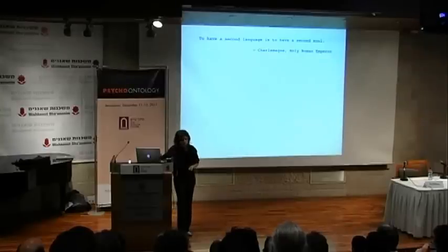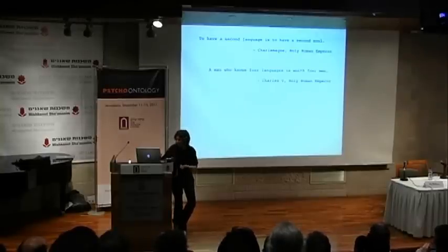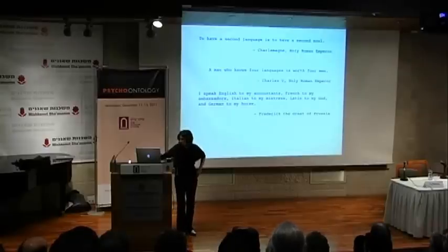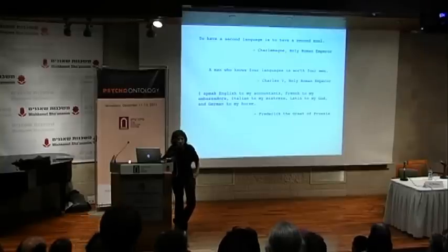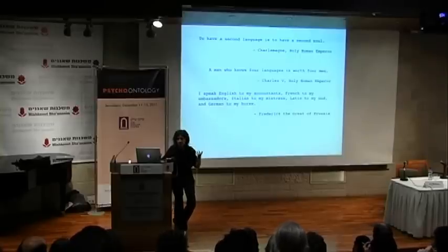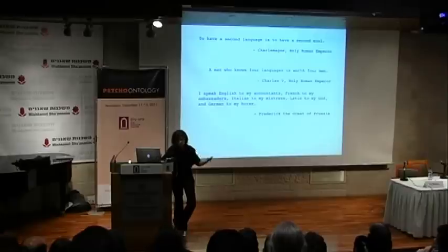Charlemagne says 'to have a second language is to have a second soul' — a very strong statement about the relationship between language and identity. Charles V says 'a man who knows four languages is worth four men.' Frederick the Great of Prussia had a more specific set of hypotheses: 'I speak English to my accountants, French to my ambassadors, Italian to my mistress, Latin to my god, and German to my horse.' People have been making these kinds of arguments for a long time, but never with any empirical basis or evidence.